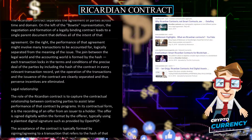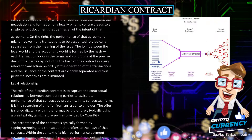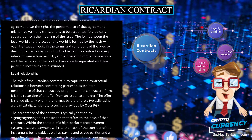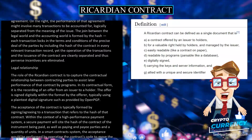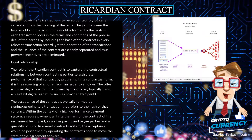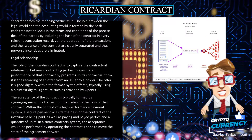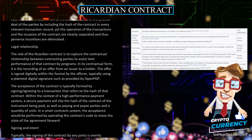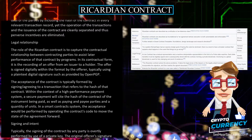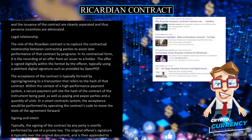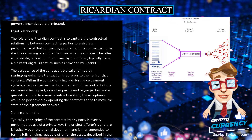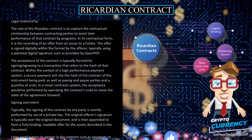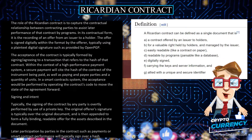The role of the Ricardian Contract is to capture the contractual relationship between contracting parties to assist later performance of that contract by programs. In its contractual form, it is the recording of an offer from an issuer to a holder. The offer is signed digitally within the format by the offerer, typically using a plain text digital signature such as provided by OpenPGP. The acceptance of the contract is typically formed by signing or agreeing to a transaction that refers to the hash of that contract. In a high-performance payment system, a secure payment will cite the hash of the contract of the instrument being paid, as well as paying and payee parties and a quantity of units. In a smart contract system, the acceptance would be performed by operating the contract's code to move the state of the agreement forward.